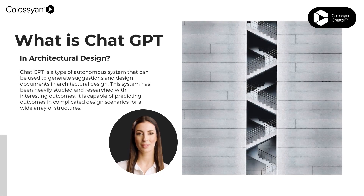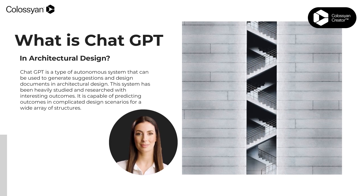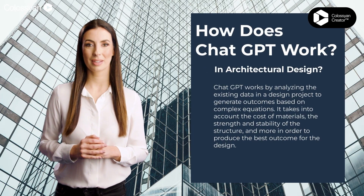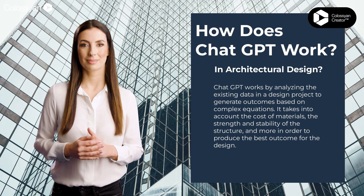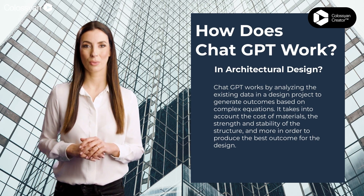ChatGPT is a type of autonomous system that can be used to generate suggestions and design documents in architectural design. This system has been heavily studied and researched with interesting outcomes. It is capable of predicting outcomes in complicated design scenarios for a wide array of structures. ChatGPT works by analyzing the existing data in a design project to generate outcomes based on complex equations, taking into account the cost of materials, the strength and stability of the structure, and more in order to produce the best outcome for the design.